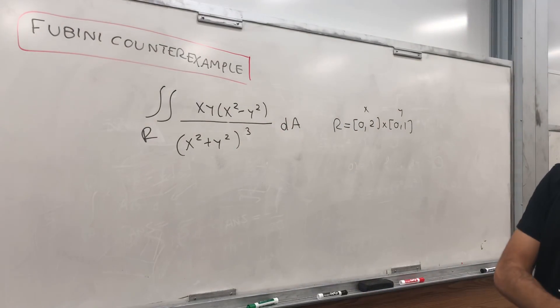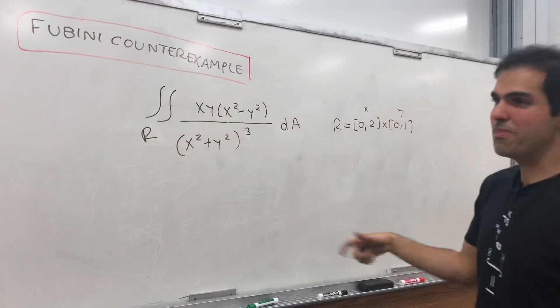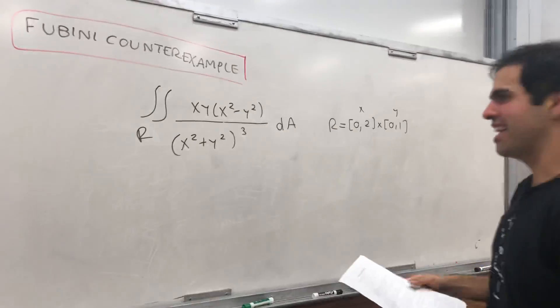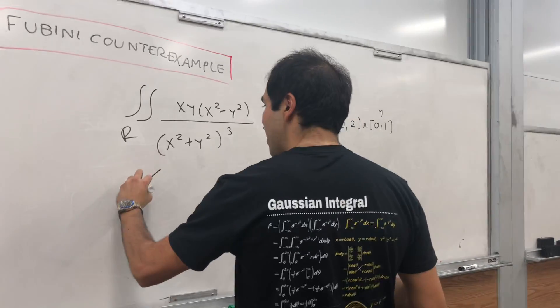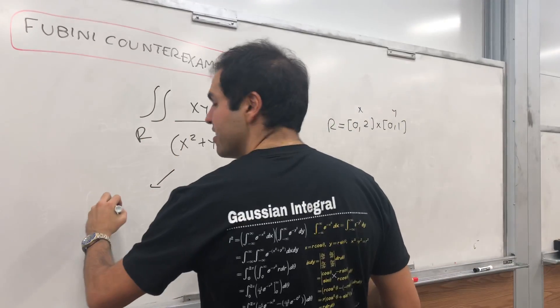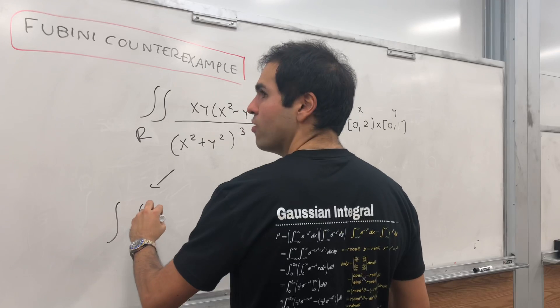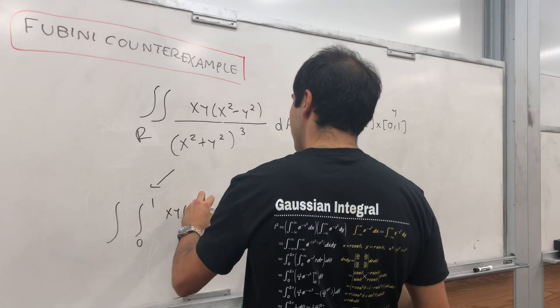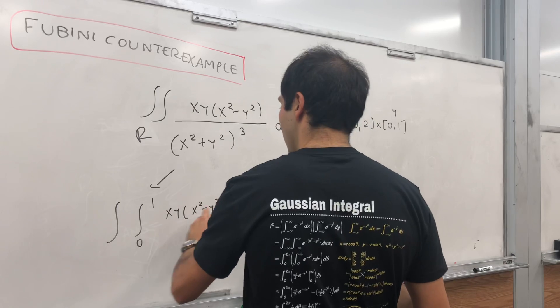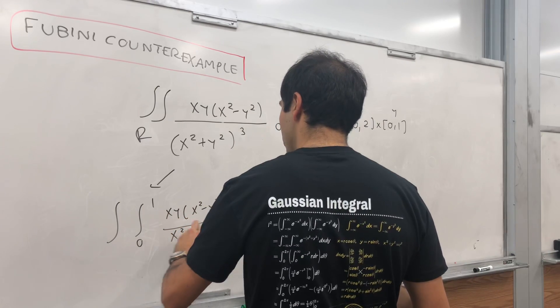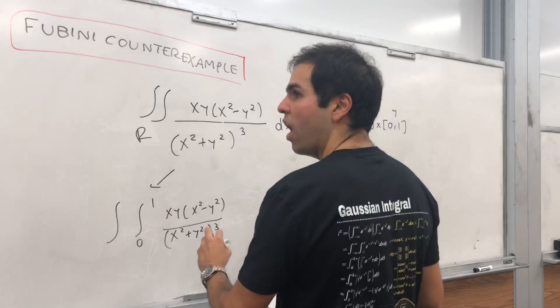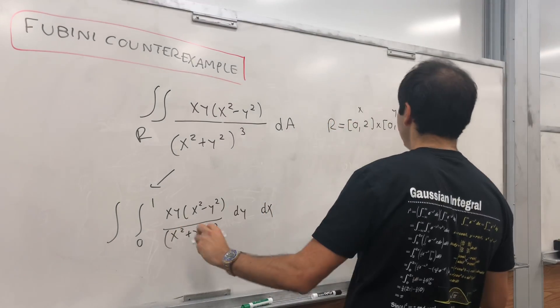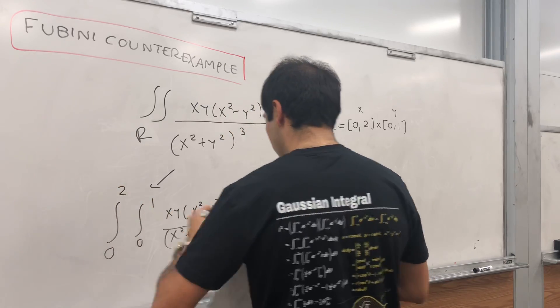So on the one hand, as I said, there are two kinds of people: people who like to do y first and then x, and people who like to do x first and then y. So one way you can calculate this integral as the integral from 0 to 2, then 0 to 1 of xy times (x squared minus y squared) over (x squared plus y squared) cubed dy dx. So y is between 0 and 1, x is between 0 and 2.